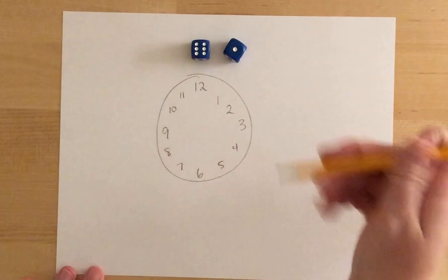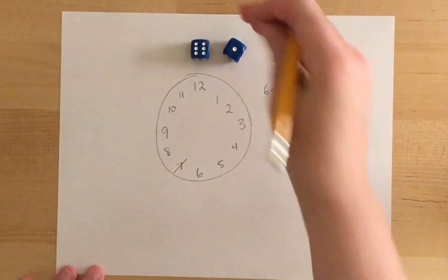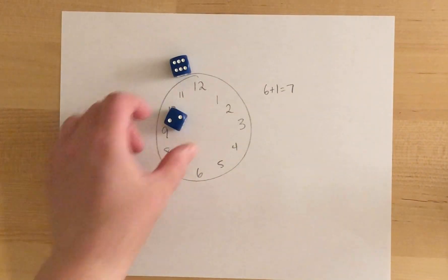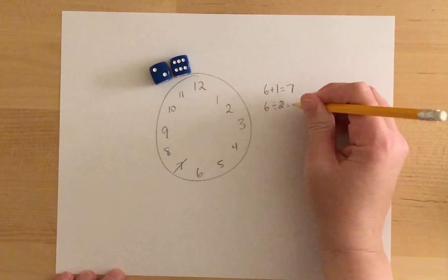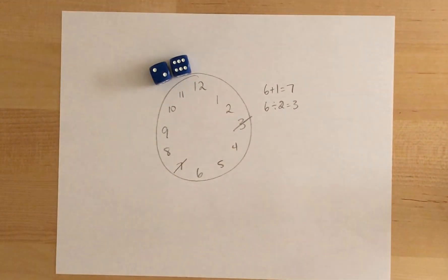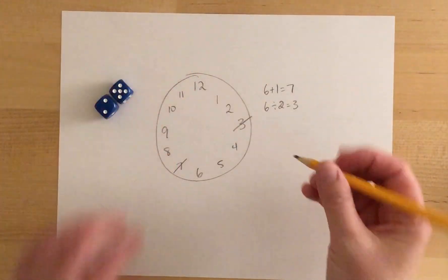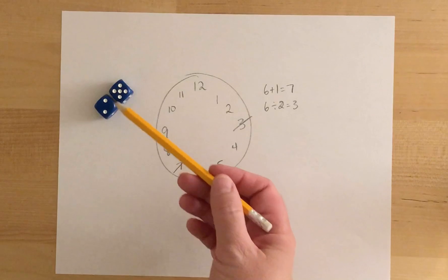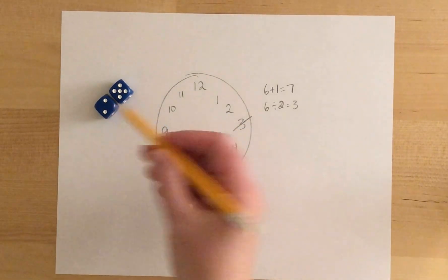For this one, I'm going to do 6 plus 1 to make 7, and I knock off the 7. Here I got 6 and 2, so I think I'm going to divide—I'll do 6 divided by 2 equals 3, and I'll knock off the 3. 5 and 2—now I already have 7 crossed out, so I could do 5 subtract 2, but I already have 3 crossed out as well, so on this one I'm going to multiply them, and that makes 10.